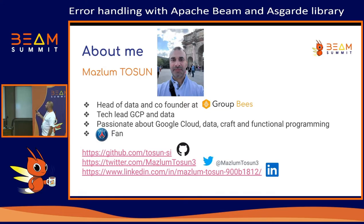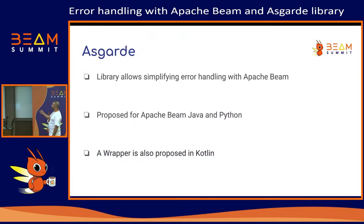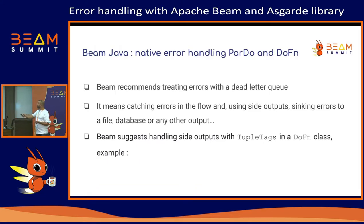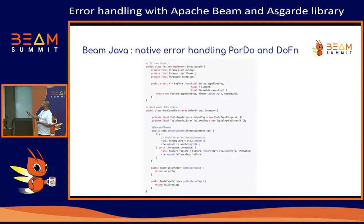Asgard is a library that allows simplifying error handling with Apache Beam. It is proposed for both Java and Python SDKs, and some extensions are also proposed with Kotlin.